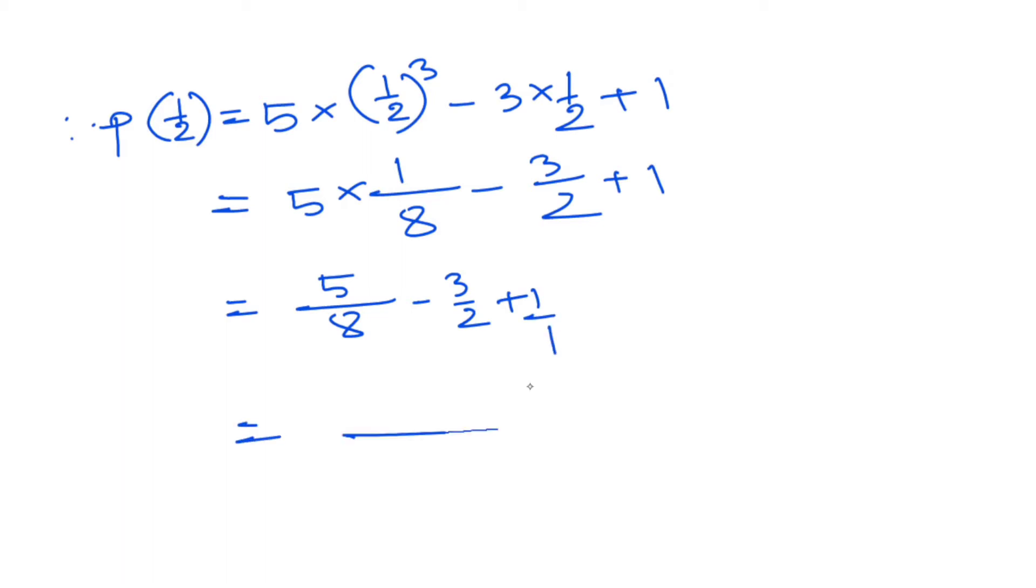To solve this, we need a common denominator of 8. So we get: 5 minus 12 plus 8 over 8. This equals 1/8.